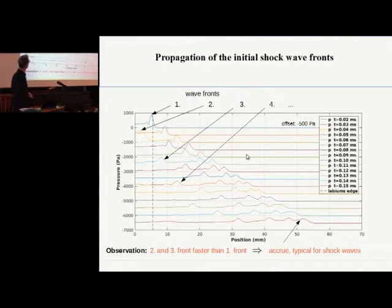Here you can see the plot where the time evolution of this initial pressure fluctuation or propagation is shown. First, the first wave front, more or less linear. And if you look to the second and the third one, you can see these are faster than the first one. And that means that these fronts accrue. They come up to accruing.